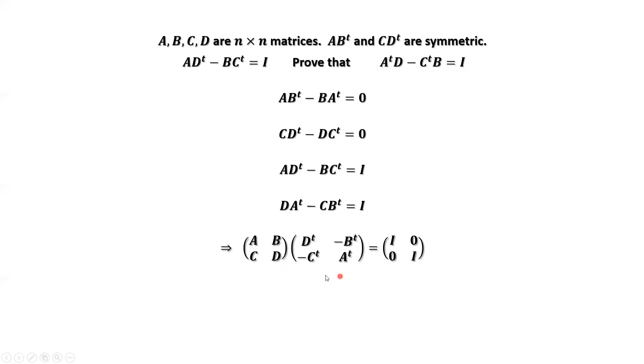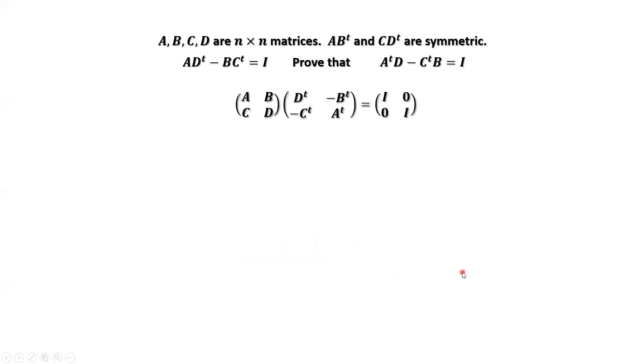This is a very important result. Why is it important? The product of two matrices equals identity. This means the two matrices, they are inverses of each other. The first one is the inverse of the second one. The second one is the inverse of the first one.